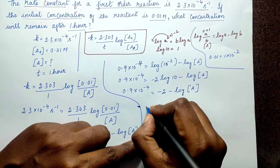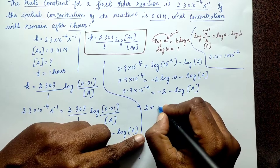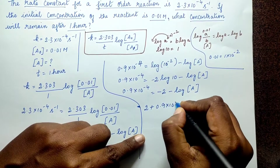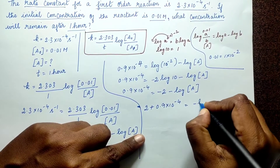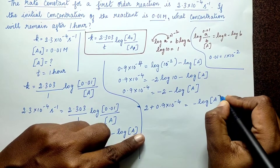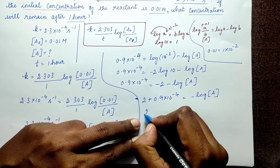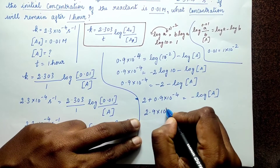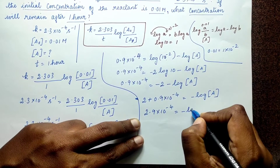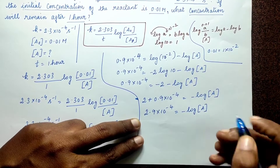Moving the −2 to the left side, it becomes +2. So: 2 + 1.9 × 10⁻⁴ = −log[A]. Adding: 2.9 × 10⁻⁴ ≈ 2.0002 — so effectively: 2.9 × 10⁻⁴ = −log[A], giving us −log[A] = 2.0002.